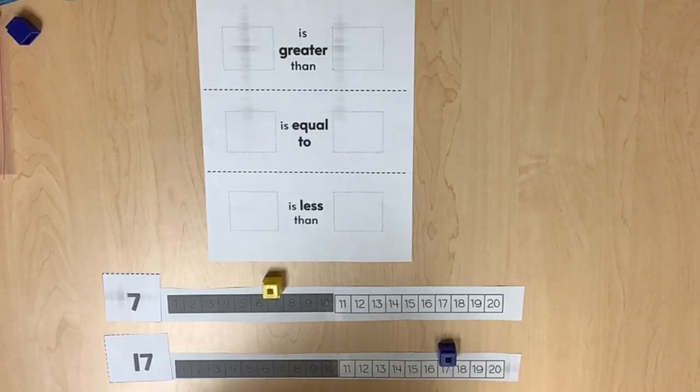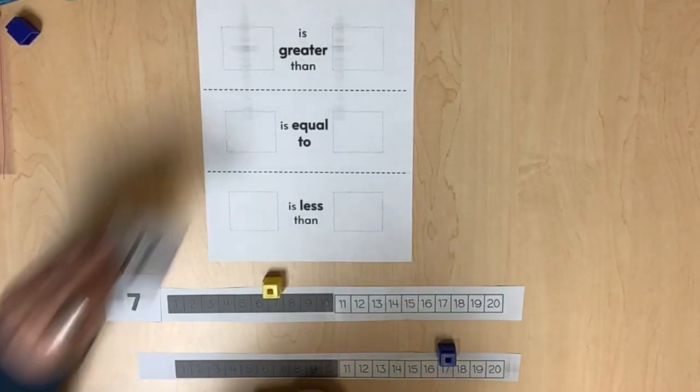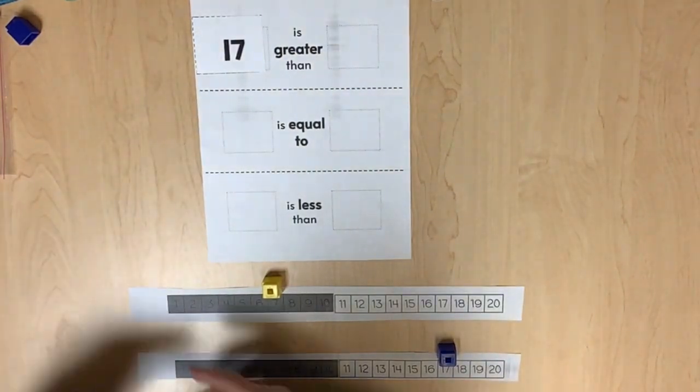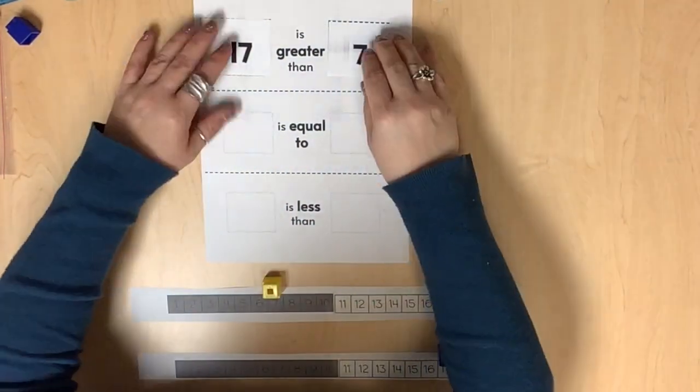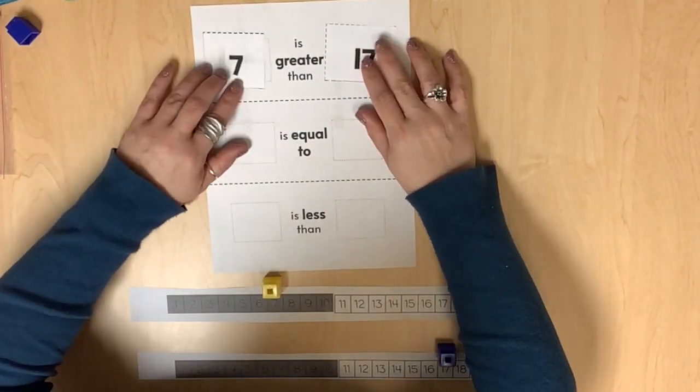Finally, continue to use comparison mats to compare the two numbers. Make sure that students understand that it's not a true comparison if we switch the order of the number cards.